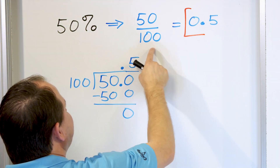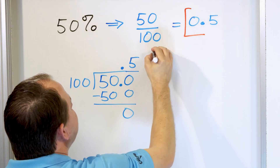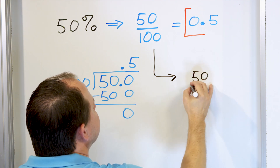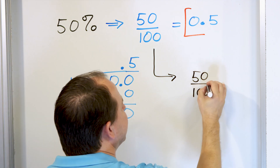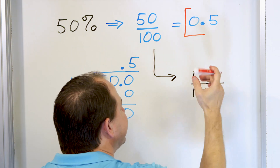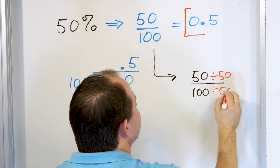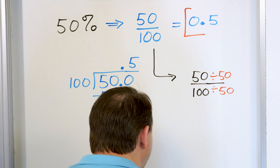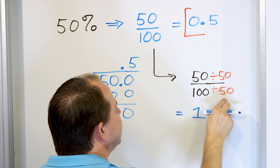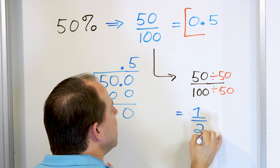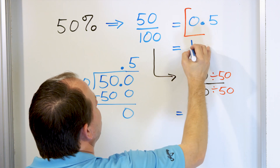Now let's look at this fraction one more time. What if we don't do the division to get the decimal, but instead write 50 over 100 as a fraction and simplify it? Both top and bottom share a factor of 50, so we divide the top by 50 and the bottom by 50. 50 divided by 50 is 1, and 100 divided by 50 is 2. So we get 1 half.